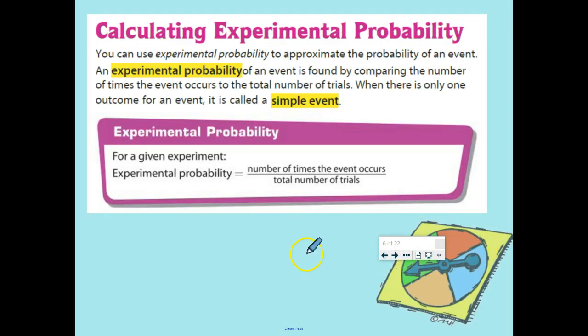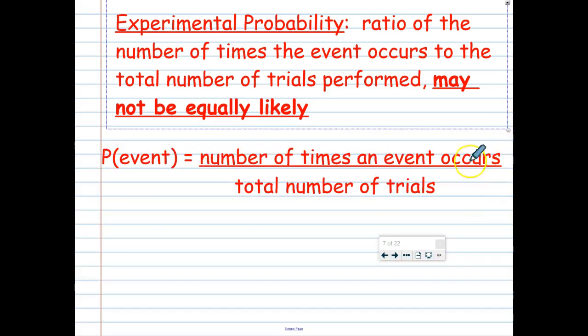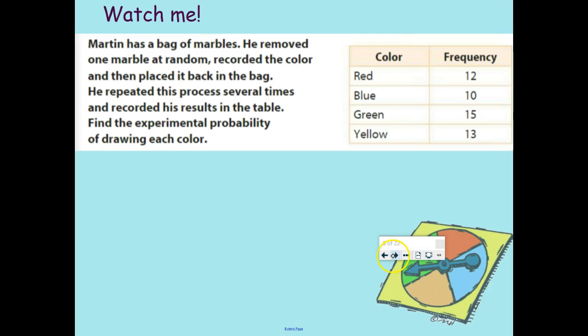So what we just did was calculate experimental probability. That just means we're going to do an experiment. And in probability, an experiment just means doing something, like flipping a cup or rolling a die or flipping a coin. And we compare the number of times that whatever it was that we wanted to happen, happened, and we put that over the total number of trials, like how many times we rolled the die or flipped the cup. Go ahead and pause the video, copy these things in. A big thing to remember is that they may not be equally likely. Like the cup example was not equally likely.